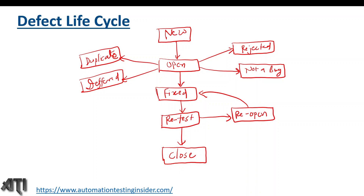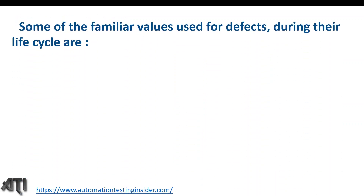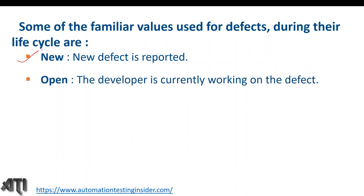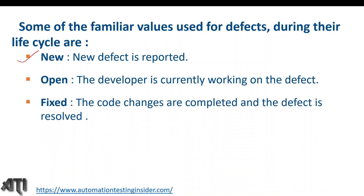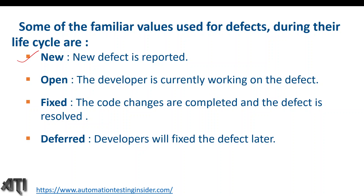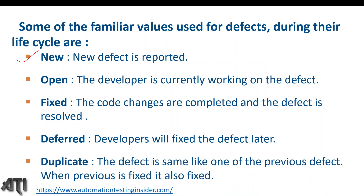Let me recap the various statuses. 'New' — defect is reported. 'Open' — developer is currently working on the defect. 'Fixed' — code changes are completed and the defect is resolved. 'Deferred' — developers will fix the defect later in the next cycle. 'Duplicate' — the defect is the same as a previous defect; when the previous defect is fixed, it is also fixed.